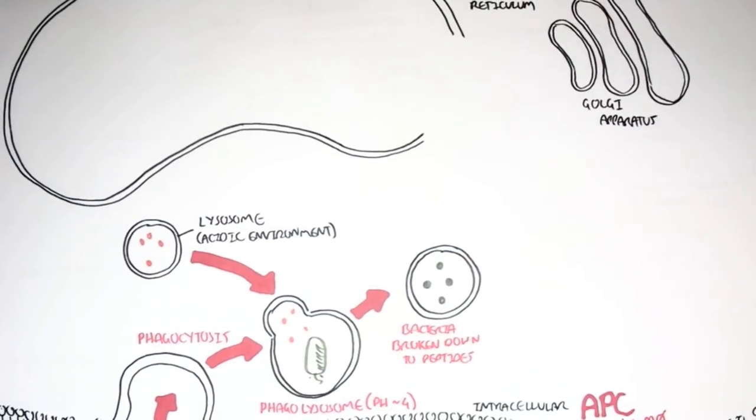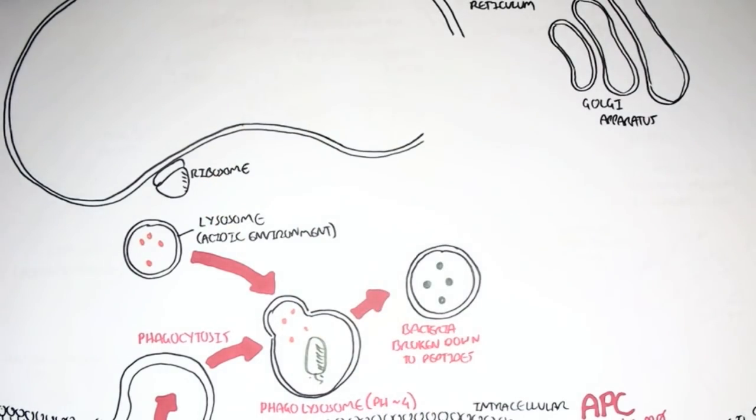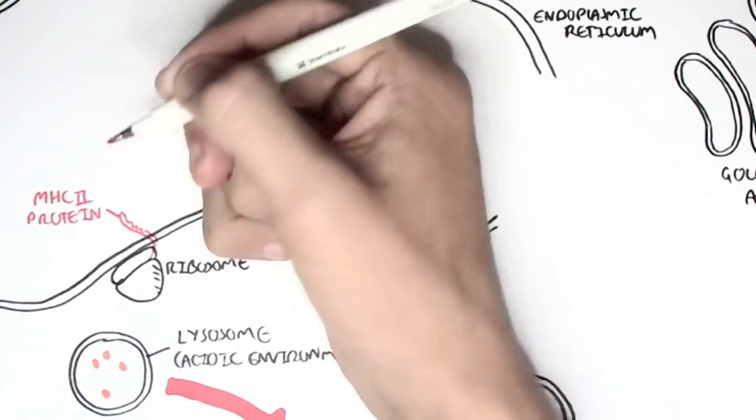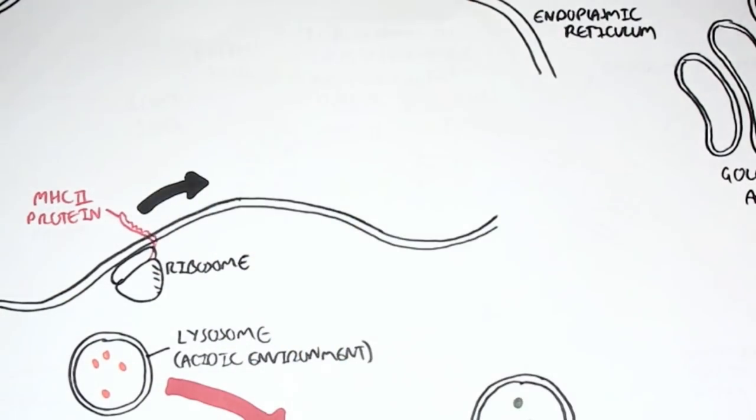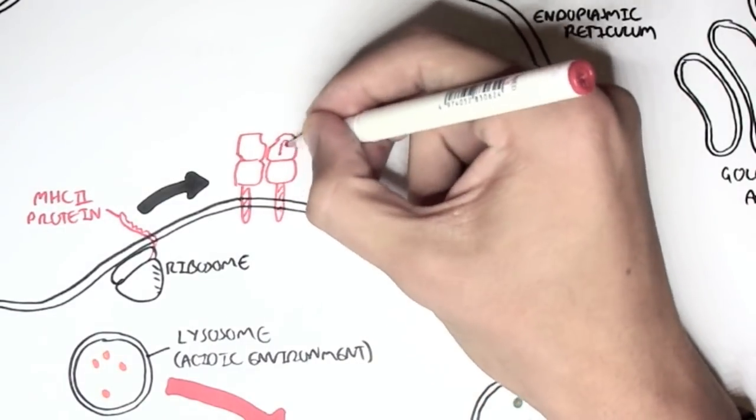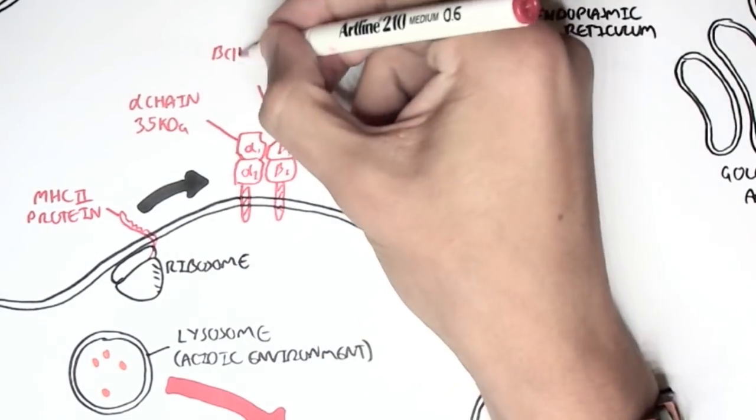Within the endoplasmic reticulum, the ribosomes are synthesizing MHC class II molecules. The MHC class II is made up of alpha 1 and 2 domains and beta 1 and 2. The alpha portion is about 35 kD in mass, and the beta is about 23 kD.